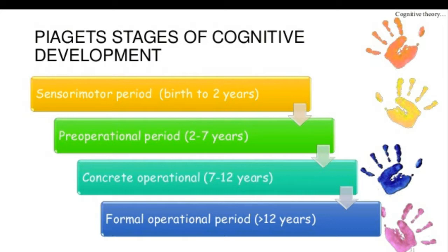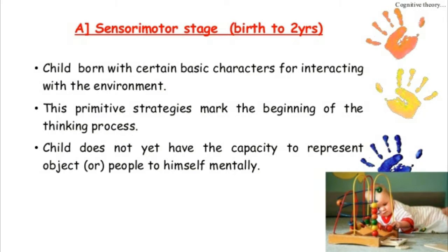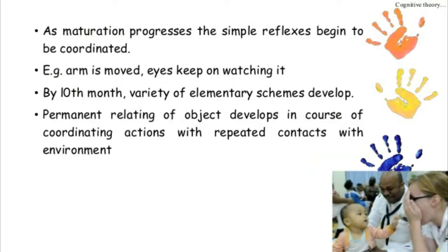In the sensory motor period, birth to two years, the child is born with certain basic characteristics for interacting with the environment. This primitive strategy marks the beginning of the thinking process. The child does not yet have the capacity to represent objects or people to himself mentally. As maturation progresses, simple reflexes begin to be coordinated. The child becomes upset when the mother or caretaker is absent and goes in search of her. Separation anxiety begins at the age of 6 months as the child develops object permanence and the visual ability to recognize strangers.